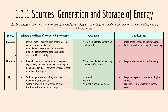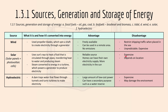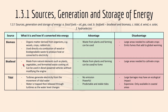Biomass is an organic material derived from organisms like roots, crops, and rubbish. It is used directly via combustion of wood or biodegradable waste to produce heat or to convert into electricity. The advantage is that waste from plants and farming can be used. The disadvantage is that large areas are needed to cultivate crops and it emits fumes that add to global warming.